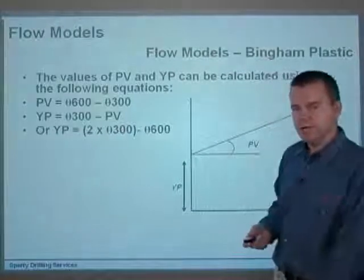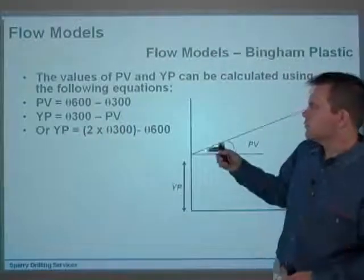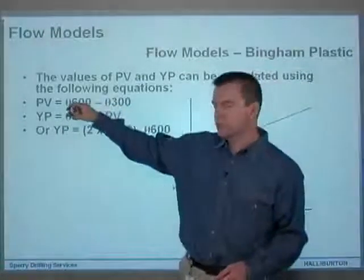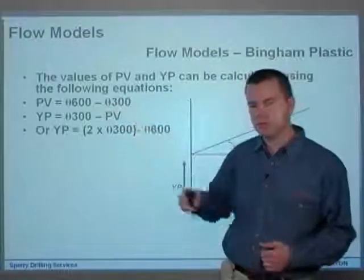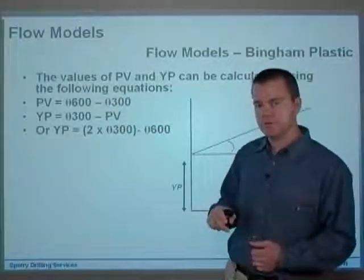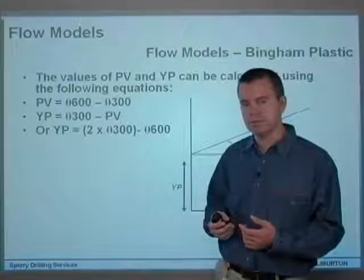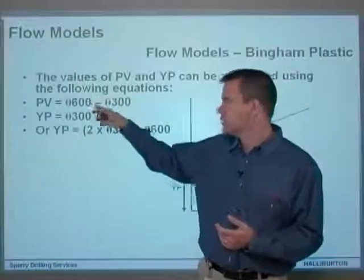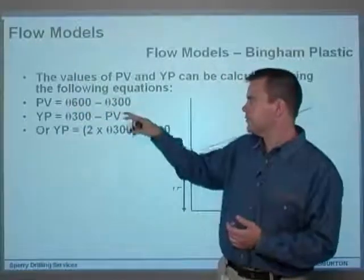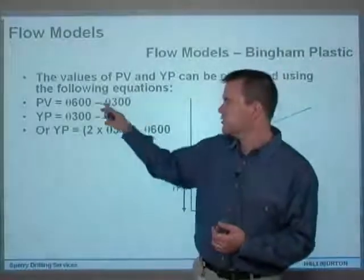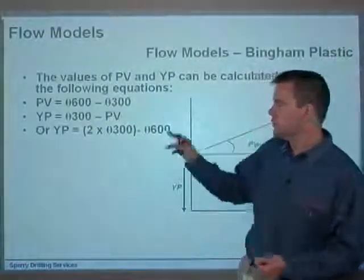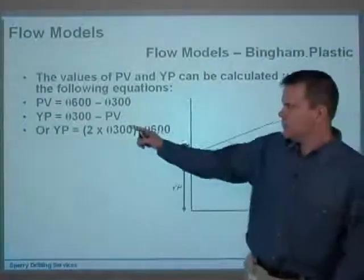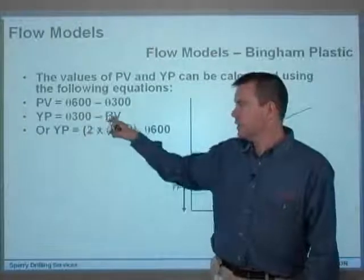The values of PV and YP can actually be calculated using the following equations. PV is the theta 600 minus the theta 300. Now these are your rotational speeds of your Fann rheometer. As you saw Hector, when Hector was demonstrating the Fann viscometer, the rheological properties of the mud, he got a dial reading at 600 RPM and 300 RPM. So the PV is actually 600 minus 300. So whatever the values were there gives you your PV, and PV, as I said before, is the slope of the line.